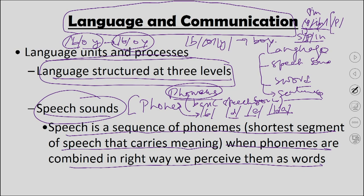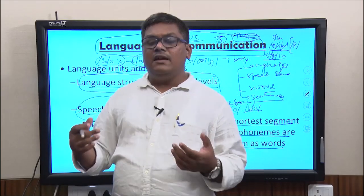Different phonemes are one reason why we cannot easily understand different foreign languages. When learning another language, each foreign language has different speech sounds, making it difficult to learn. For example, the English word 'bus' would be pronounced differently in German. Another example: the R phoneme and the L phoneme are approximately the same in Japanese, which is why 'rice' and 'lice' are pronounced similarly — most Japanese people pronounce R-I-C-E and L-I-C-E in the same way because they do not have a different phoneme for R and L.